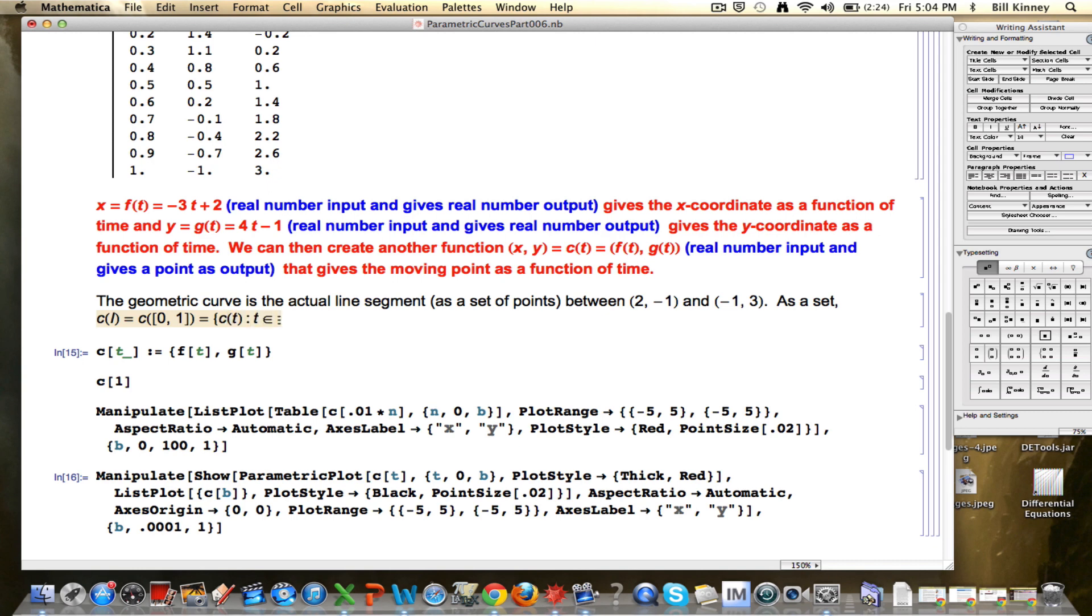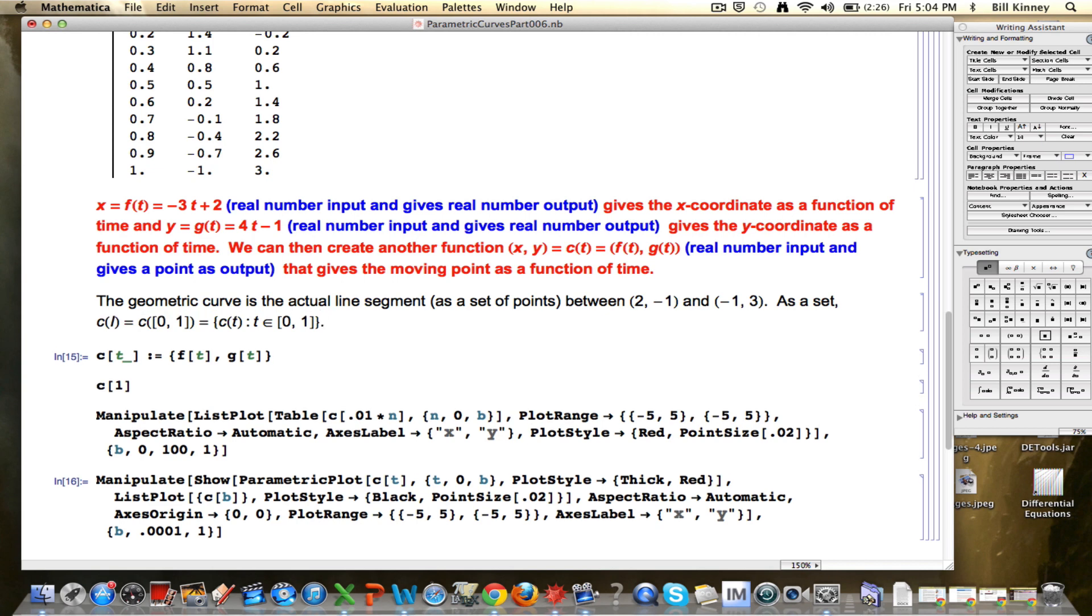With set builder notation, you could write it like this. You want to read this as saying this is the set, the collection of all possible points c(t), and they are points in the plane, such that t ranges over the interval from 0 to 1. t is an element of the interval from 0 to 1. Again, it's a number between 0 and 1 inclusive. That's a way you can write the image, the geometric curve, as a set.